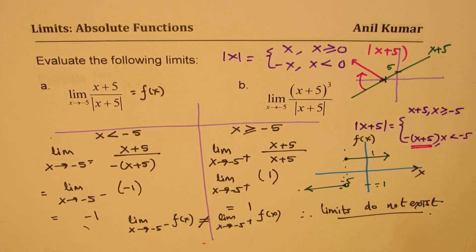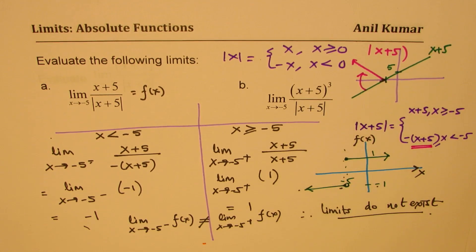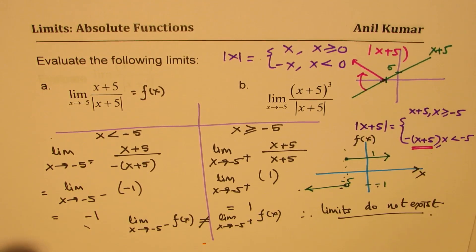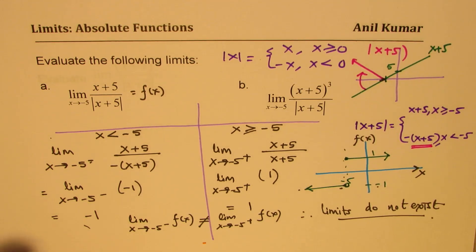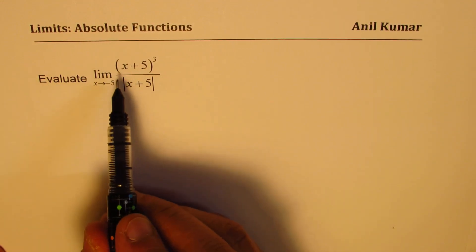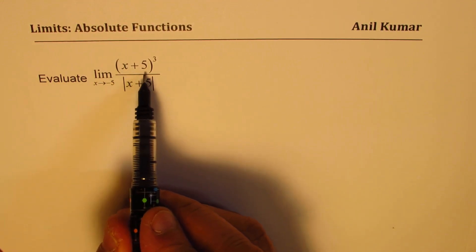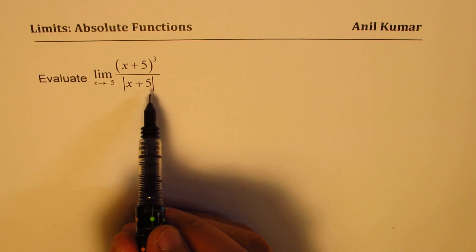Once you've understood this, pause the video, answer part b yourself, and then look into my solution. Let's take it on a new page. The function is (x+5) cubed divided by the absolute value of (x+5).